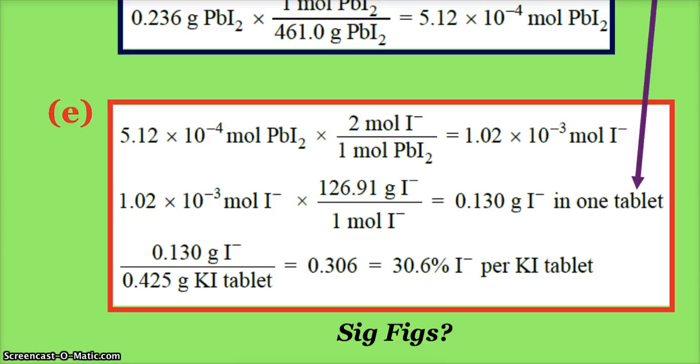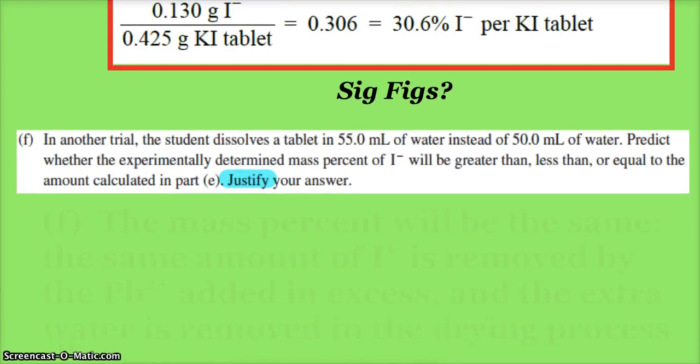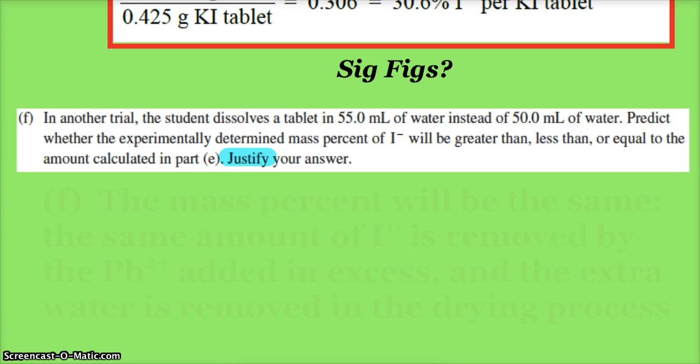A big mistake here is some people will just say, 'Well, it's KI, so I just find the percent of iodide.' No, that's not how we do that problem. We need to go by our data because we analyze the precipitate. And again, all of these calculations could have been subject to the sig fig check that they will do somewhere within the short answer questions.